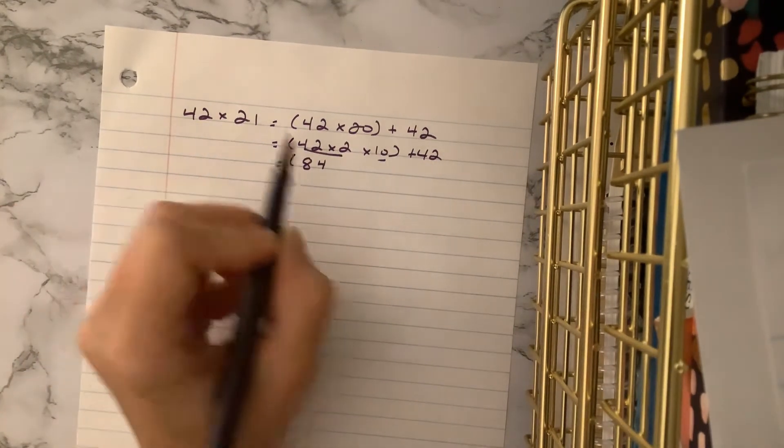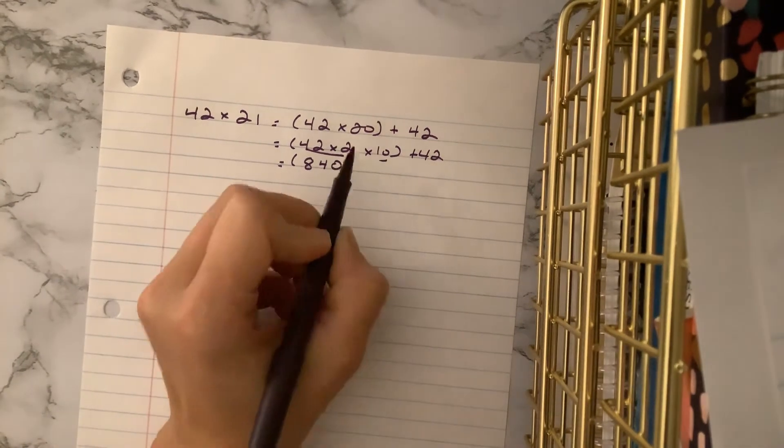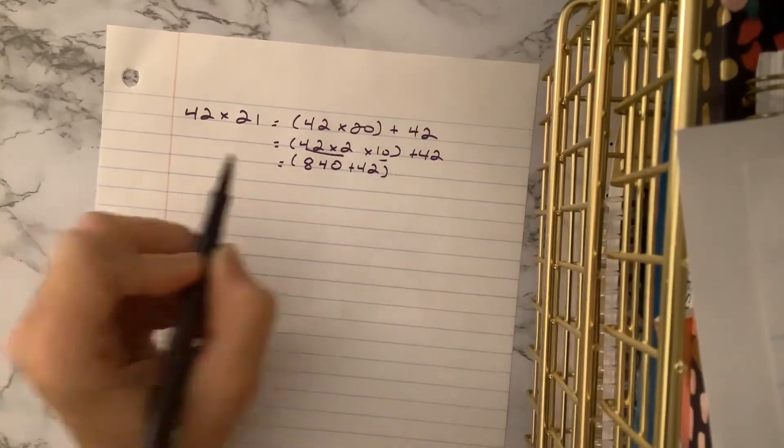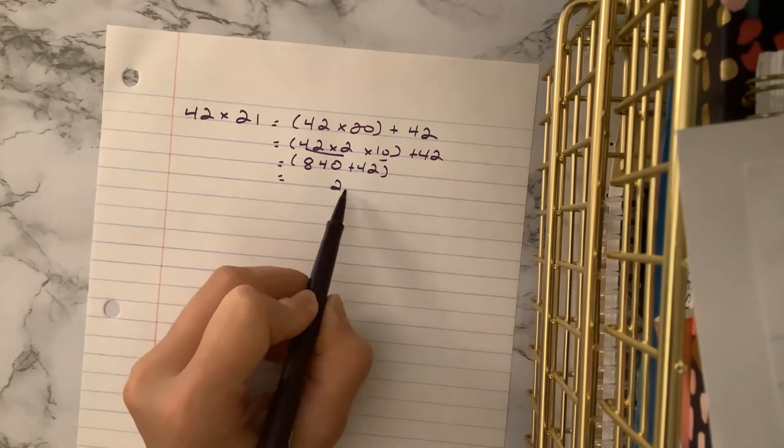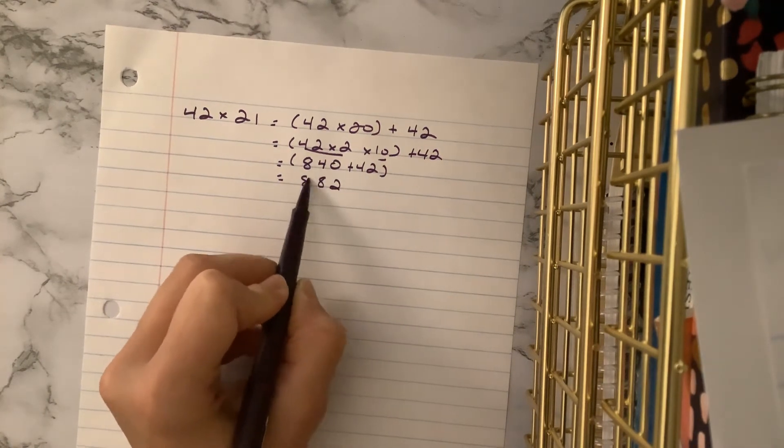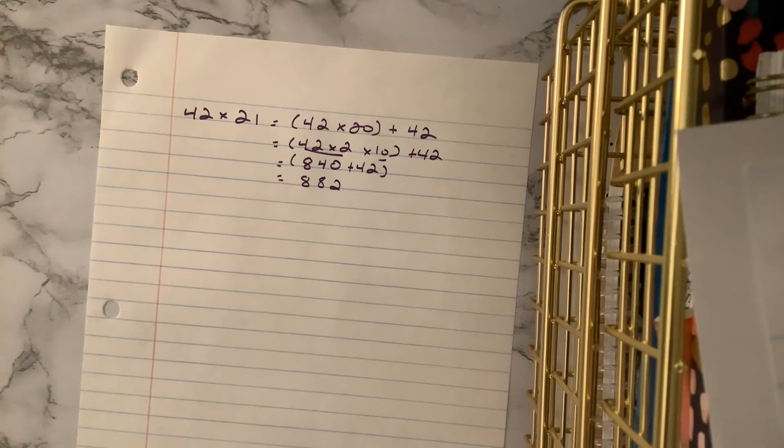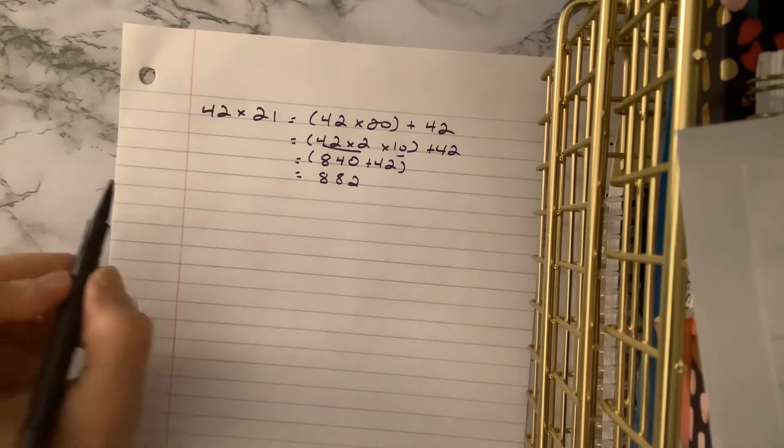Remember, if we multiply by 10, all we're doing is adding a 0. Then we add 42. Go place value at a time. 2 plus 0 is 2. 4 plus 0 is 8. 882. It was pretty slick. We kind of have to keep track of all the moving parts, but it totally works pretty quickly, I think. Let's try another one.